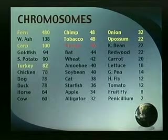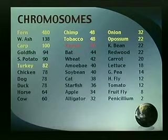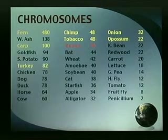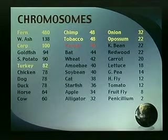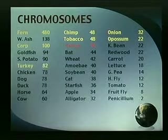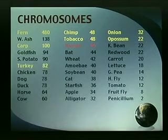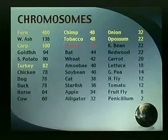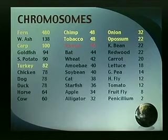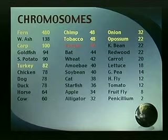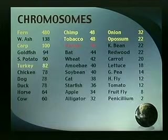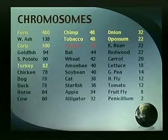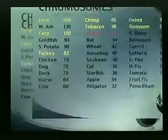We look back at this chart where more information is included. Yes, man has 46, but tobacco has 48. The chimp has 48. The fern has 480. Penicillium has 2, but look — the onion has 32. The opossum has 22. This is not an evolutionary picture. It can be made to look like an evolutionary picture if you select the evidence and arrange it and don't talk about the rest of it. I like to look at the whole picture, see who's doing the arranging, what assumptions are involved, and see all of the evidence. When you see all of it, it looks very different.